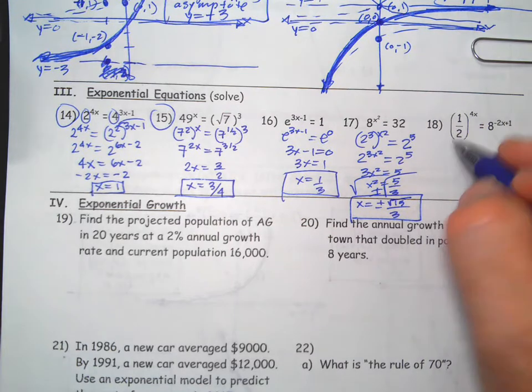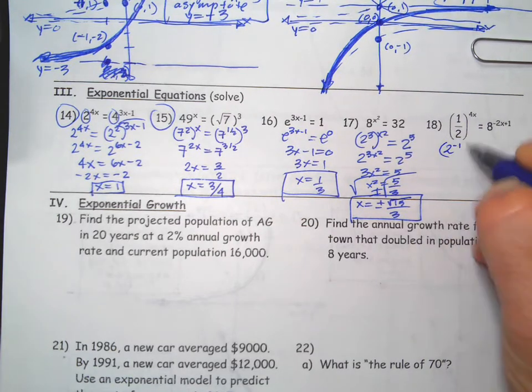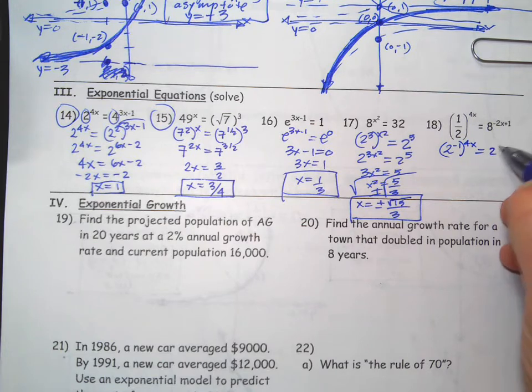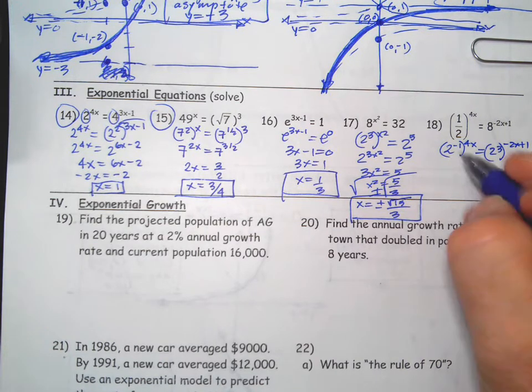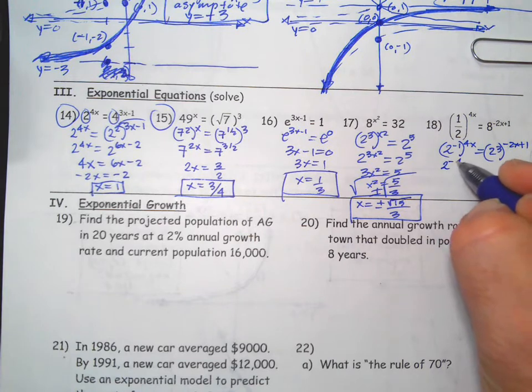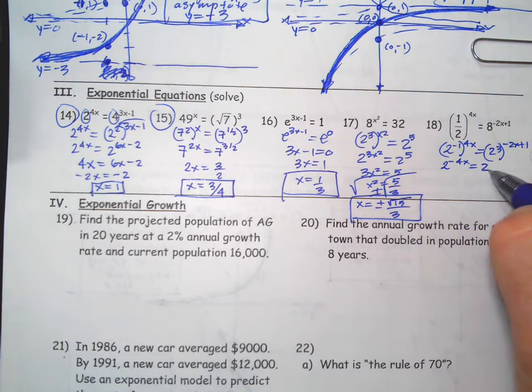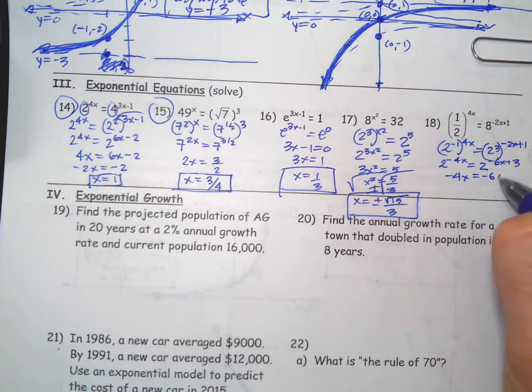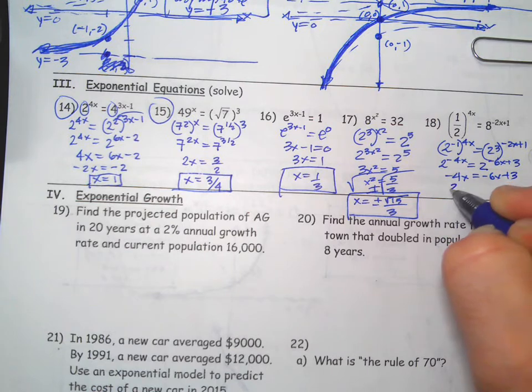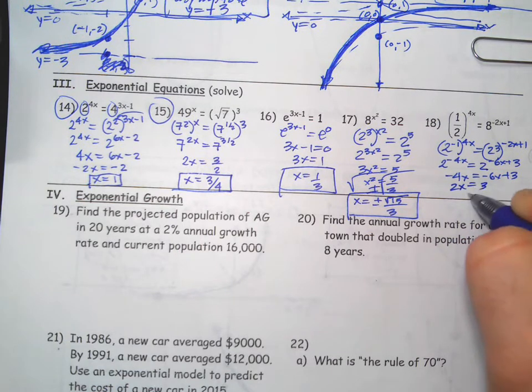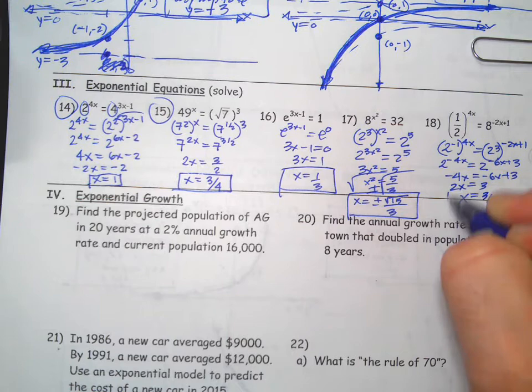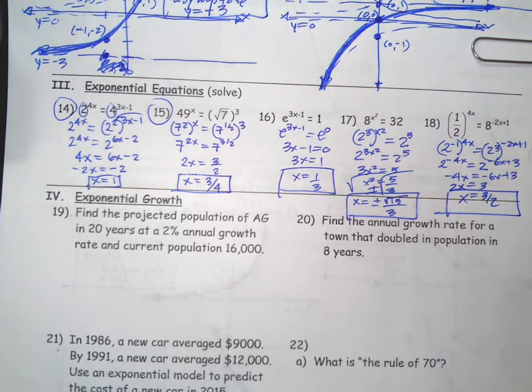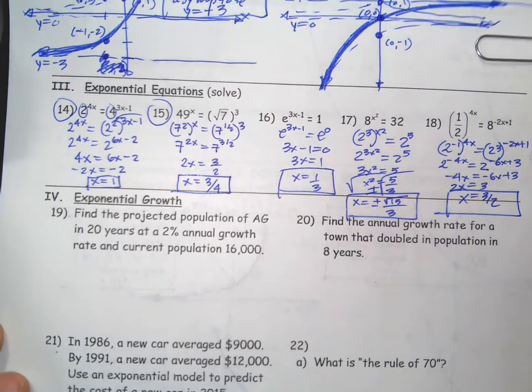This is 2 to the negative 1, this is 2 to the third. So 2 to the negative 4x equals 2 to the negative 6x plus 3. Set the exponents equal to each other. X equals 3 halves. So that's how you solve exponential equations without a calculator.